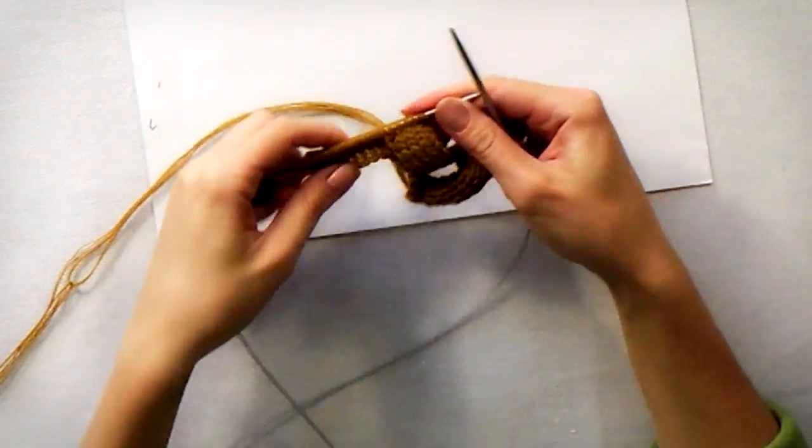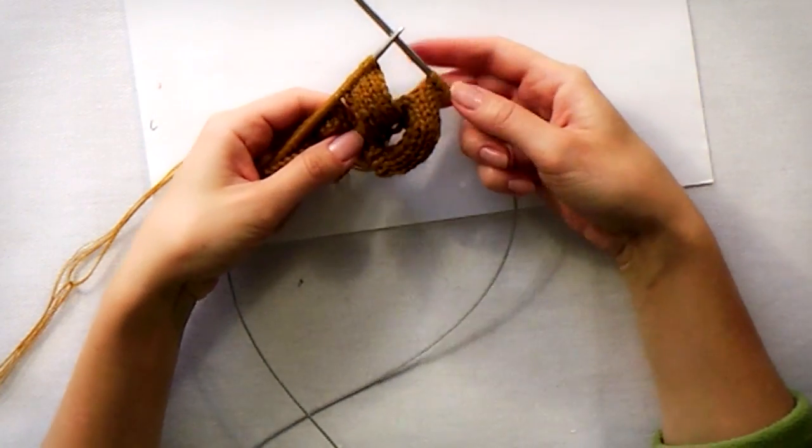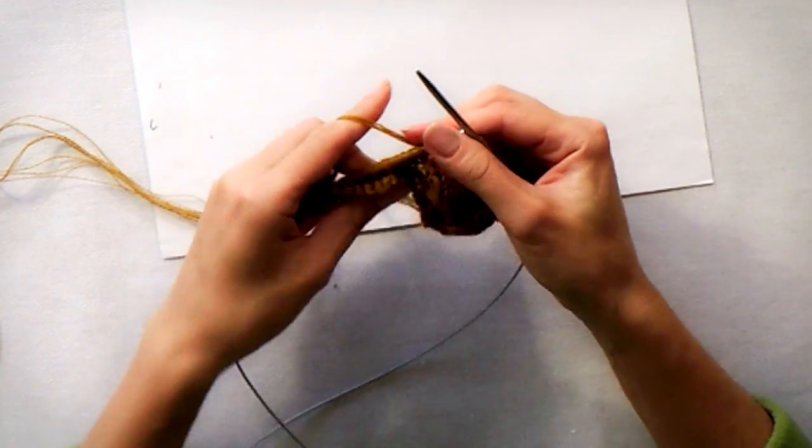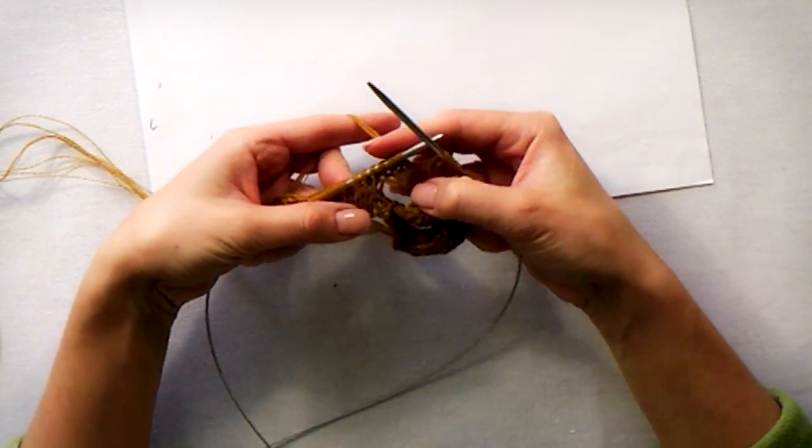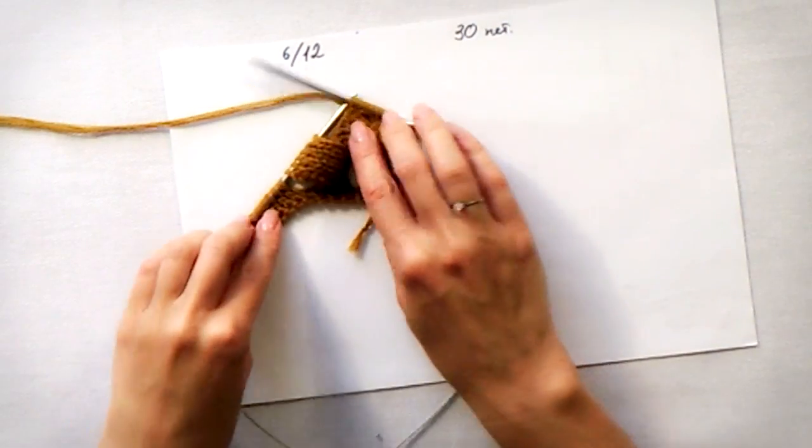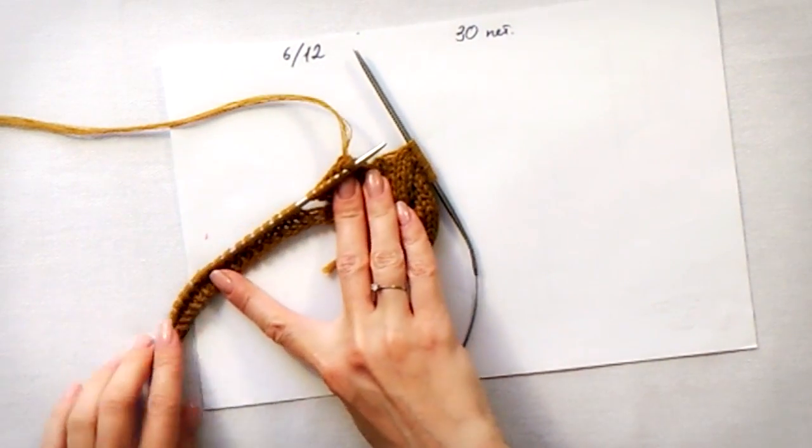Our second segment is done. Continue this segment by knitting all the 12 rows, and then do as many segments as you need to involve all the stitches from your main needle.